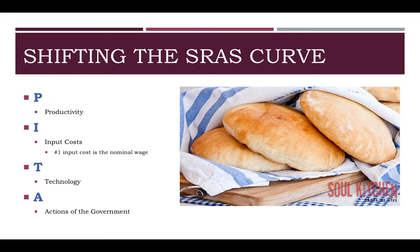What do we mean by actions of the government? This is when the government either imposes a tax on businesses or they offer businesses subsidies. If the government wanted to encourage more falafel production, they would give falafel shops a subsidy. When the government gives a subsidy, that lowers costs and aggregate supply will increase. On the flip side, if governments decide to tax businesses, that's going to increase costs and aggregate supply will decrease. So it's important that you remember the factors that shift the curve — P-I-T-A, PITA.